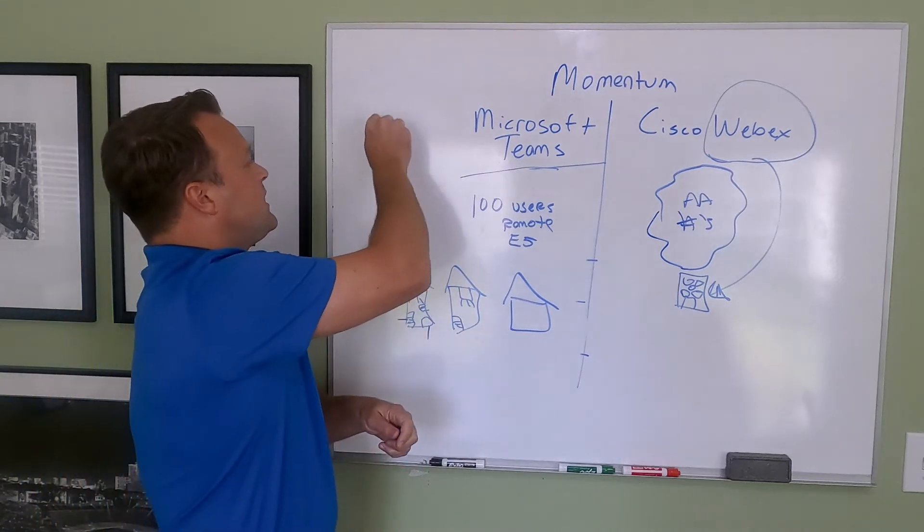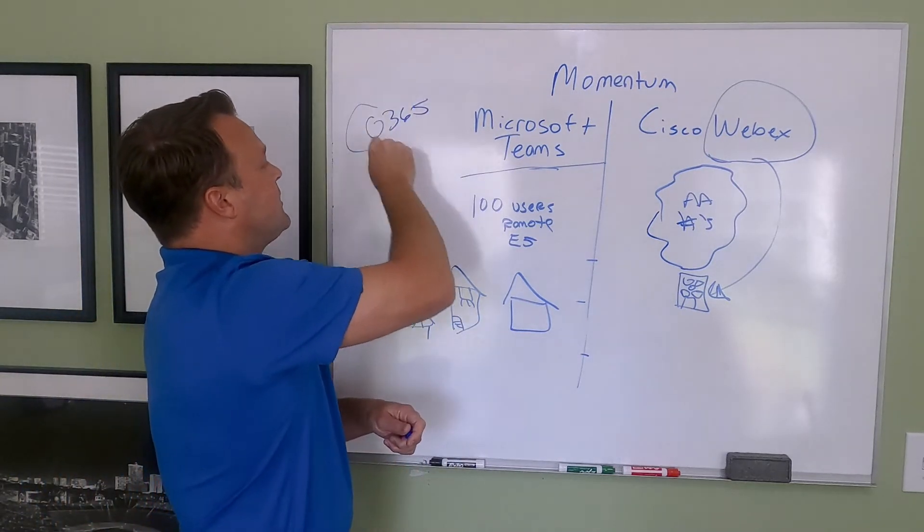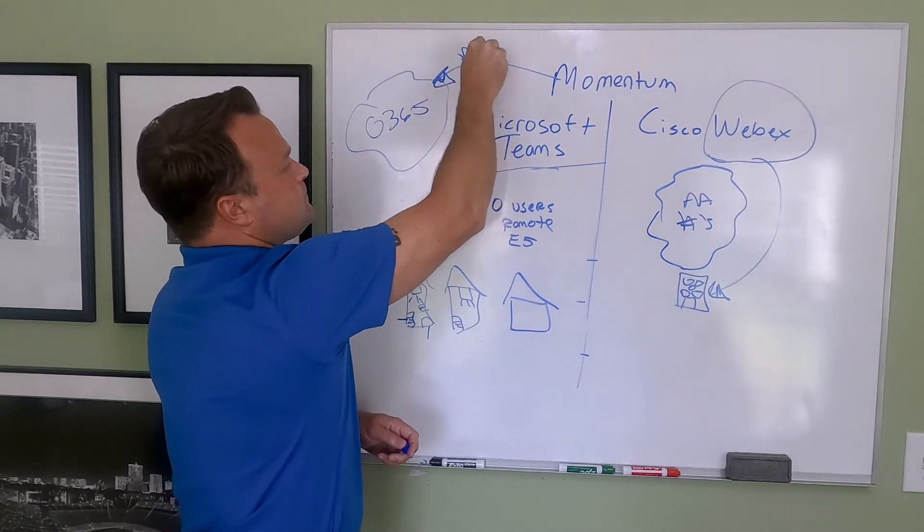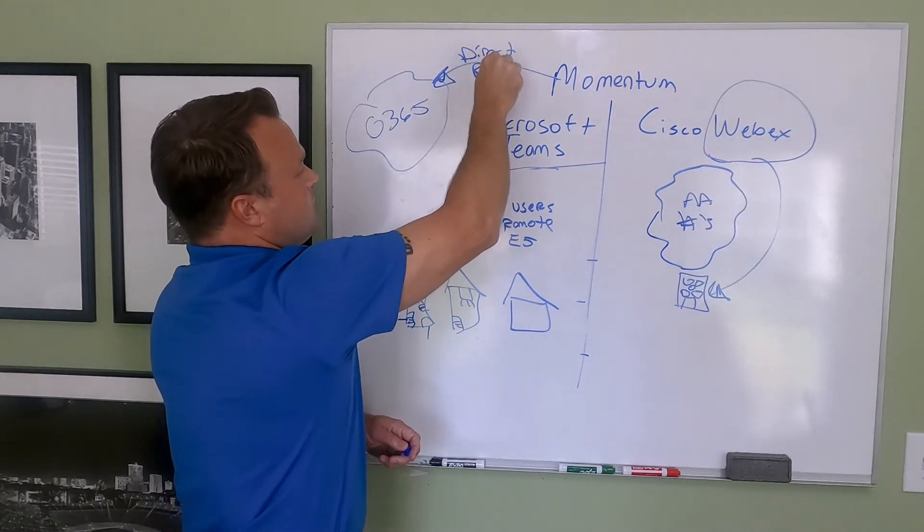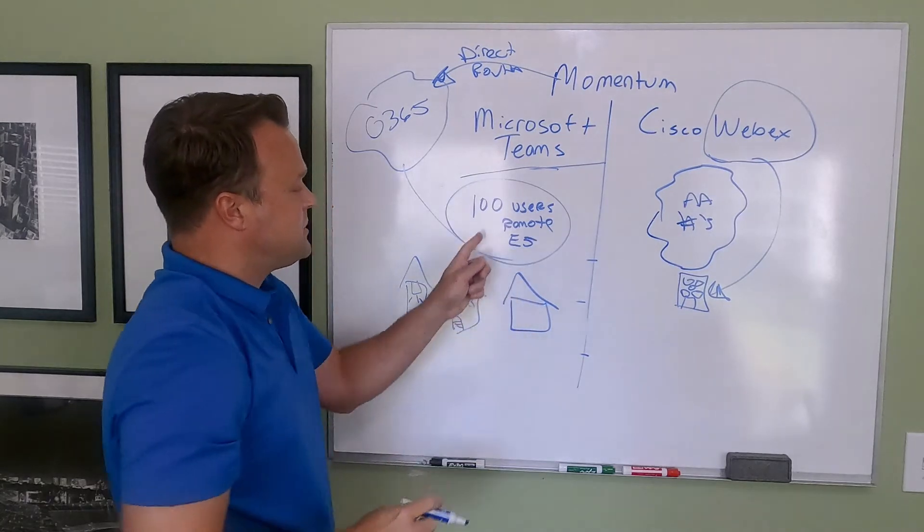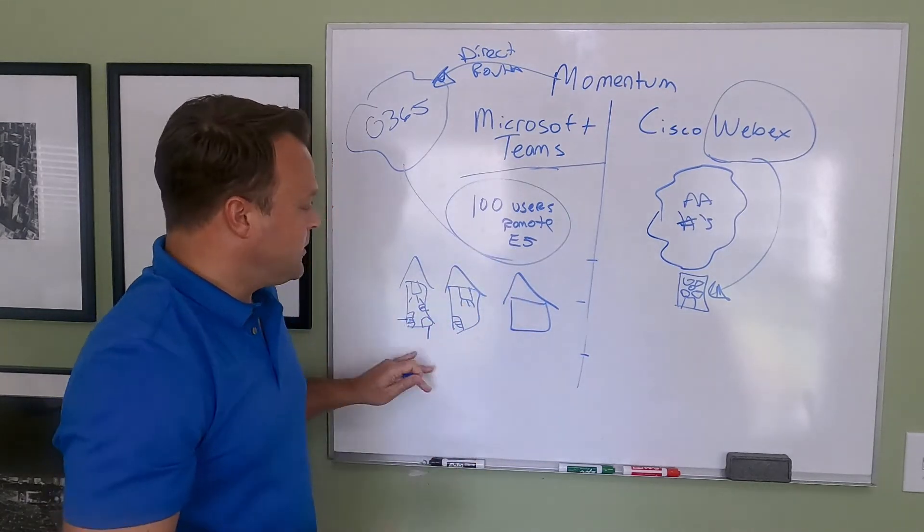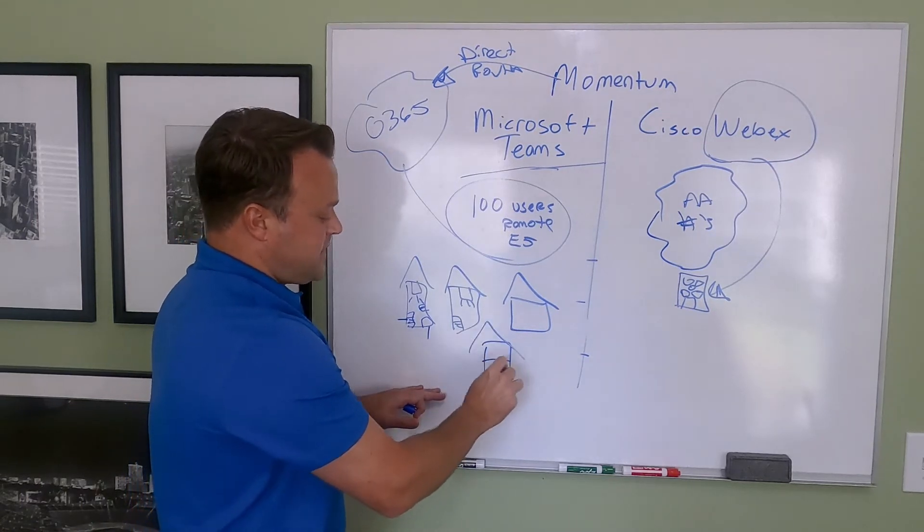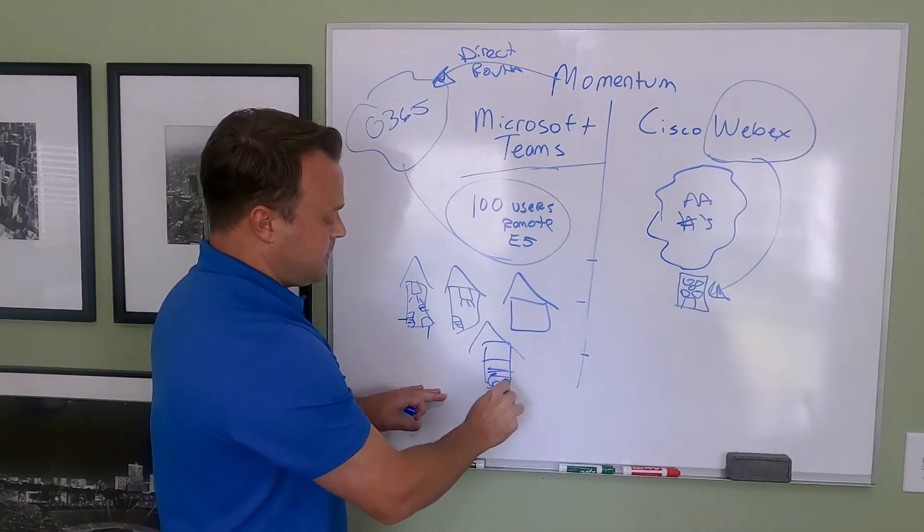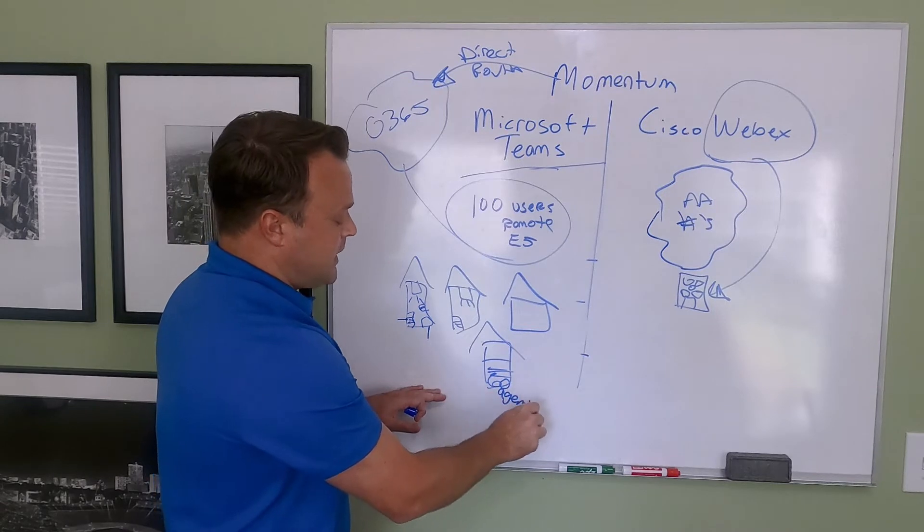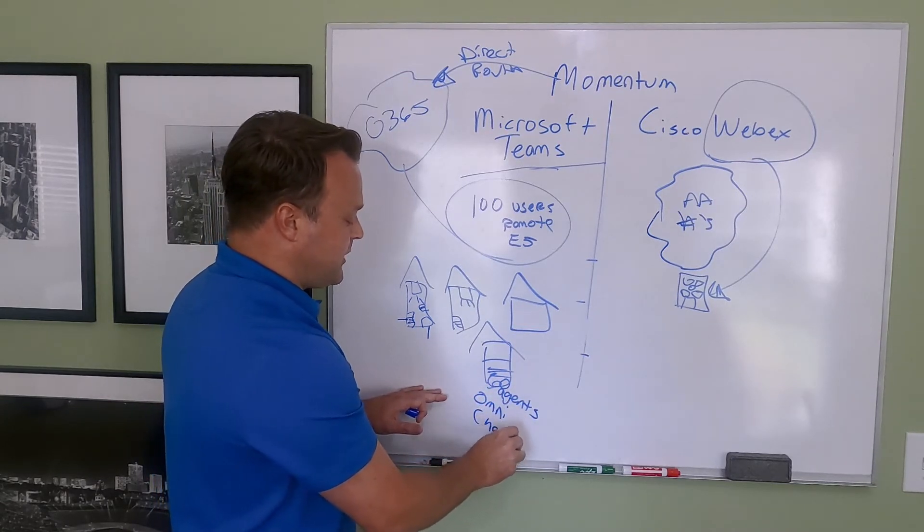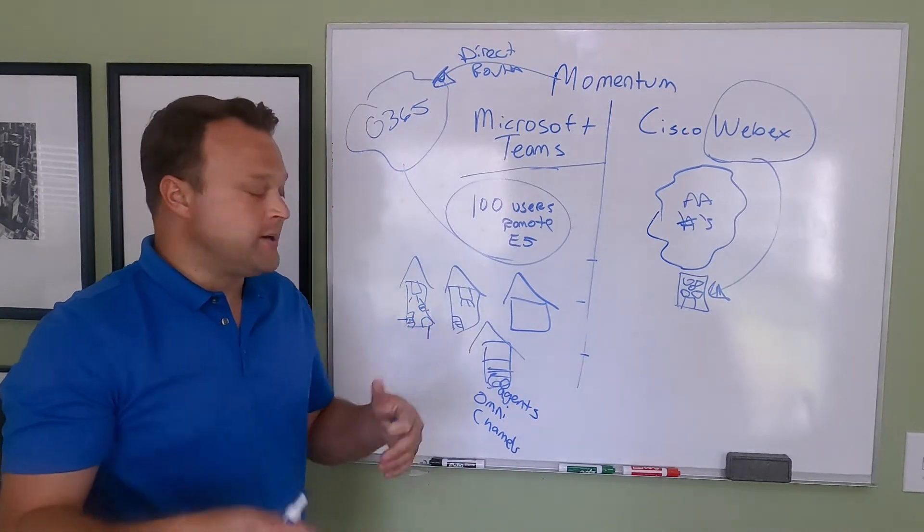Where Momentum can be helpful as opposed to having to carry heavy licensing with Microsoft, we can do a hybrid approach. You still have your O365 environment. We're providing direct routing to this for all your dial tone that enables these users here to make and receive calls. But what about your retail? What about, let's say this is a call center down here and you have 60 agents down here?